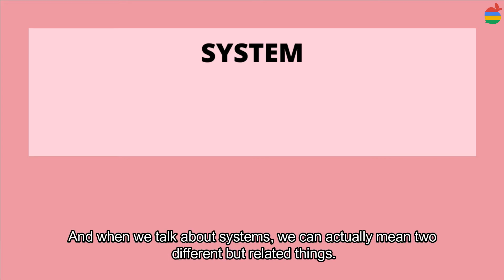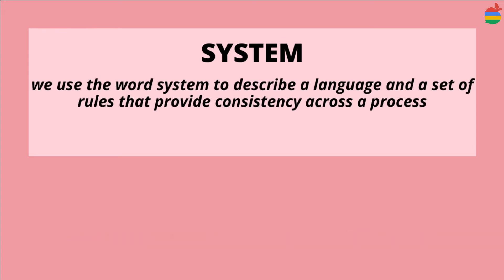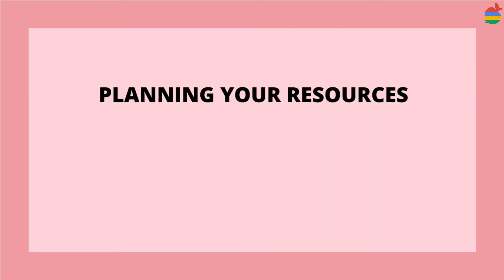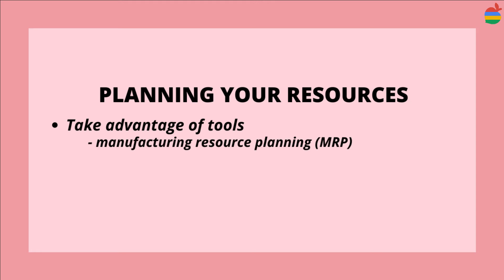When we talk about systems, we can actually mean two different but related things. First, we use the word system to describe a language and a set of rules that provide consistency across a process. You can implement a planning system for your products by using a product roadmap.